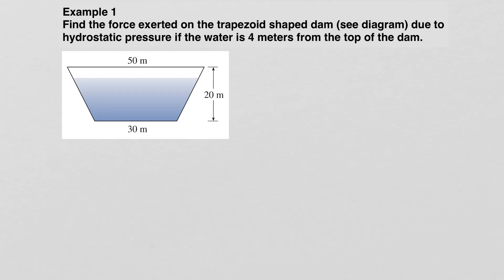Let's take a look at this example again, this time changing our coordinate system to have zero at the top of the dam instead of the top of the water level. This will show that it really doesn't matter how you set it up, as long as you are consistent.